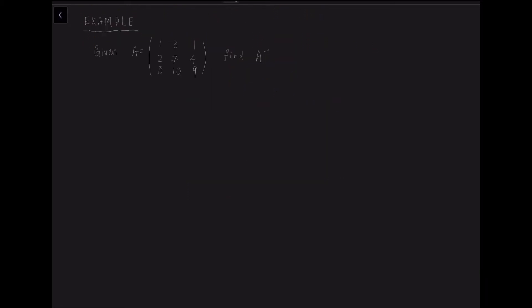Let's look at some examples. Given matrix A, we need to find its inverse. Using our formula, we first need adjoint A. Using the method we just learned, we write each cofactor of each component with the correct alternating signs: plus, minus, plus, minus, plus, minus, plus, minus, to the final term.